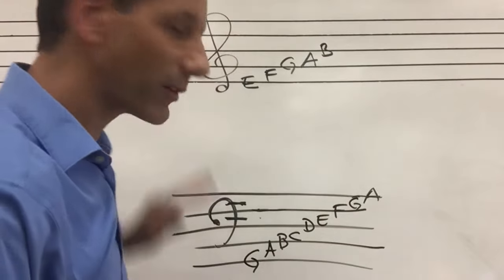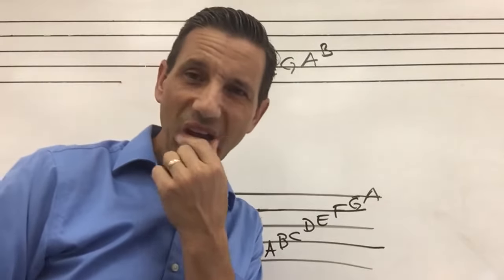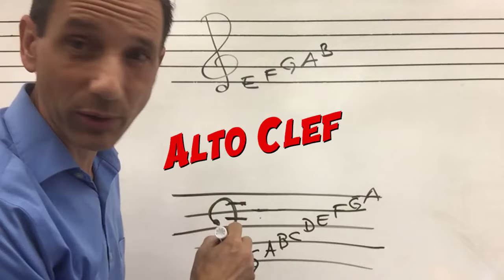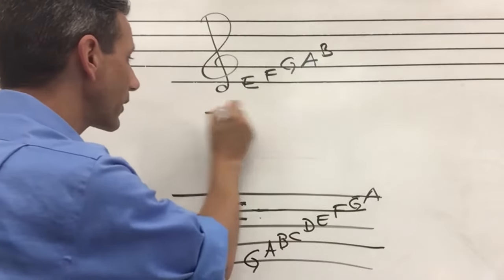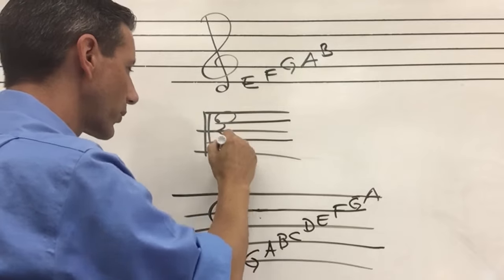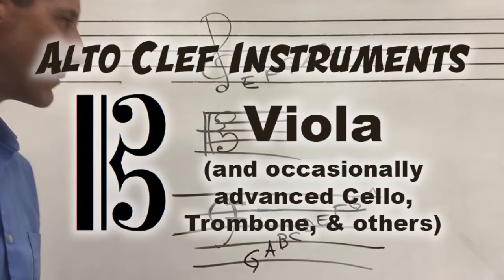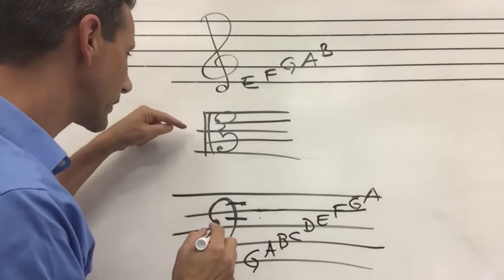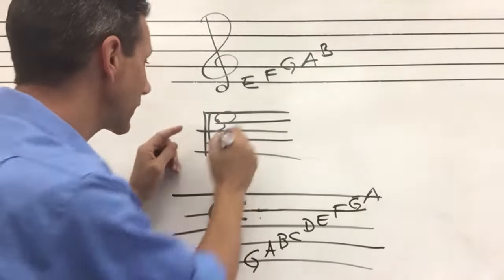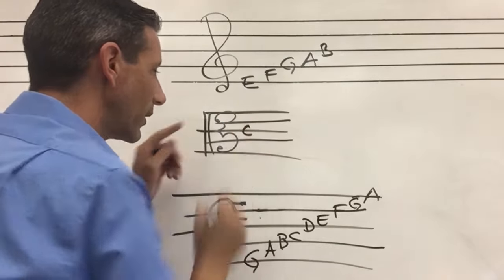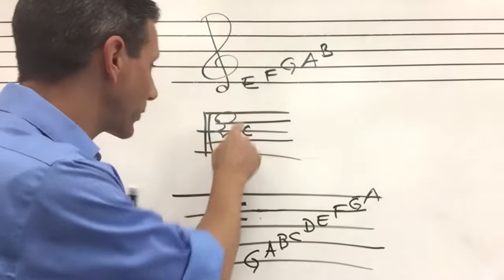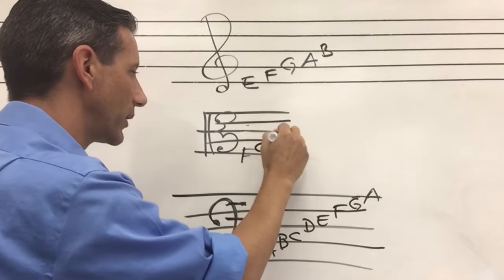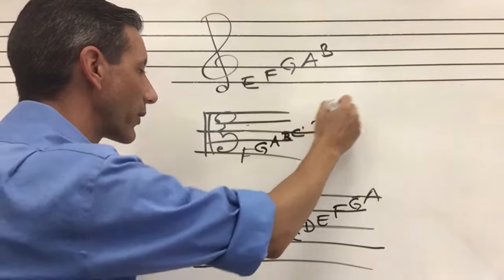In between bass clef and treble clef we have a lesser-known clef that's only used by the viola and a few others — it's called alto clef. The alto clef instruments are viola and occasionally advanced cello, trombone, and others. The alto clef shows you where C is — C is in the middle. It doesn't look like a C, but the C is in the middle line. If we know that's a C, we can go down the alphabet and find F, G, A, B, then C on that middle line.